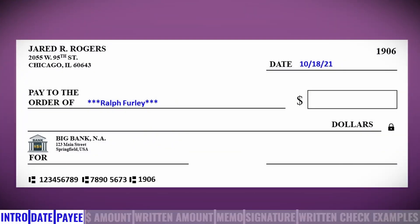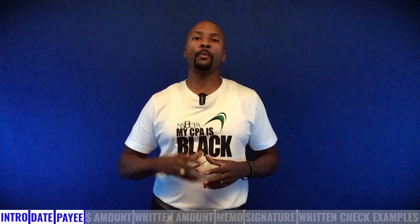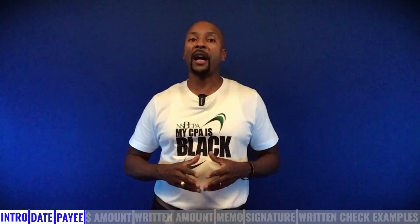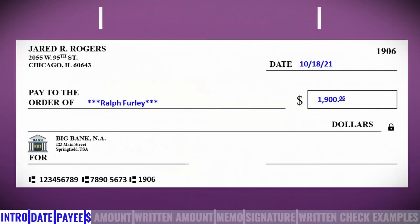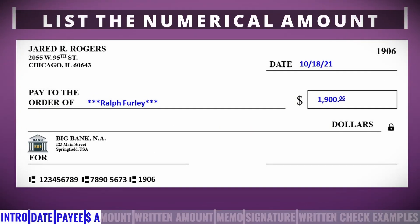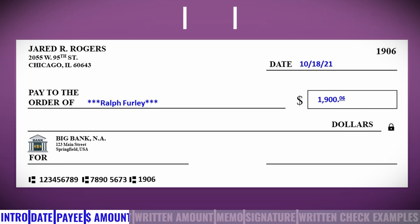My dad always would put asterisks before and after the person's name, close together so nothing else could fit — so that's what we'll do here. Step three: list the numerical amount. Write the amount to be paid numerically, making sure to use commas and decimals in the correct place. Here, we'll make the check out for $1,900.06.